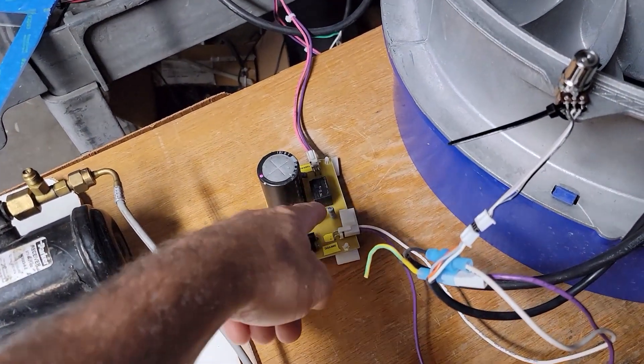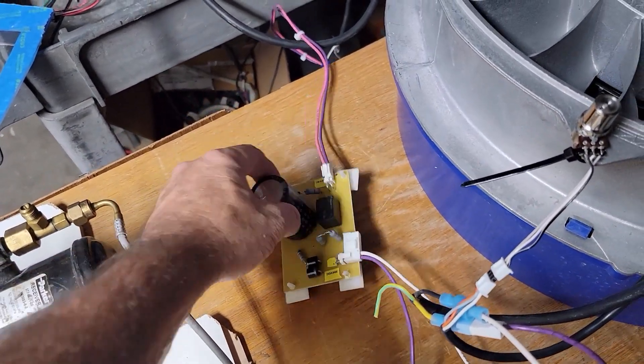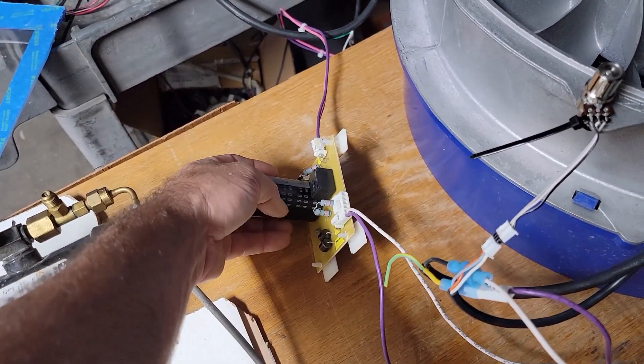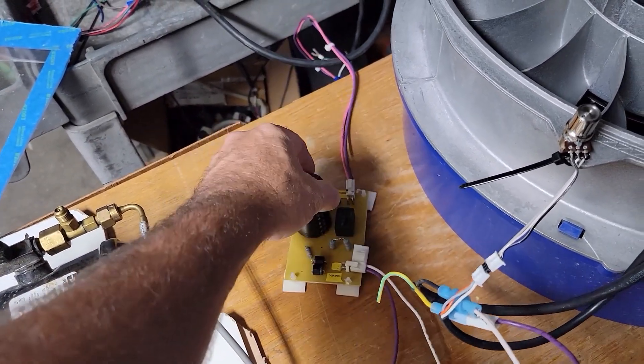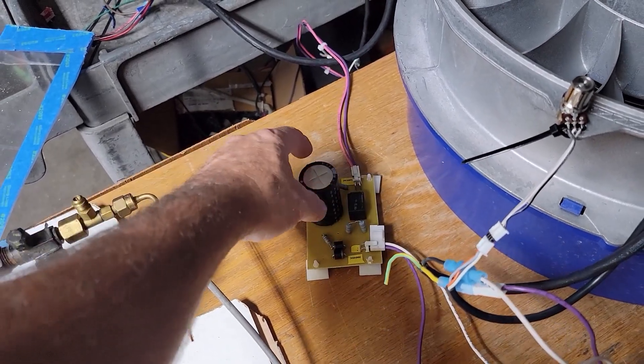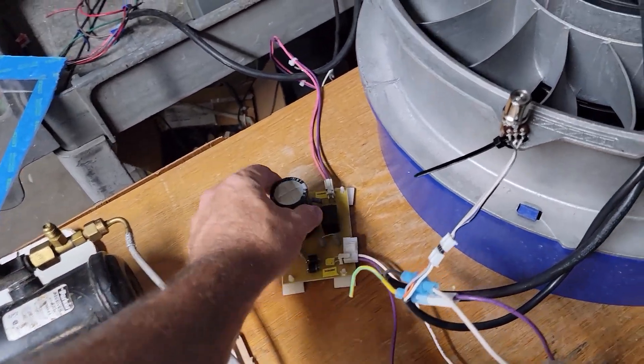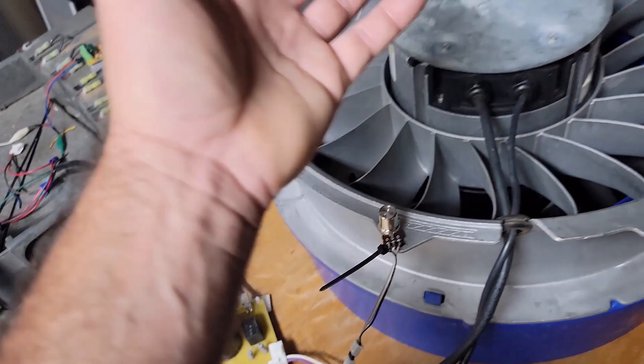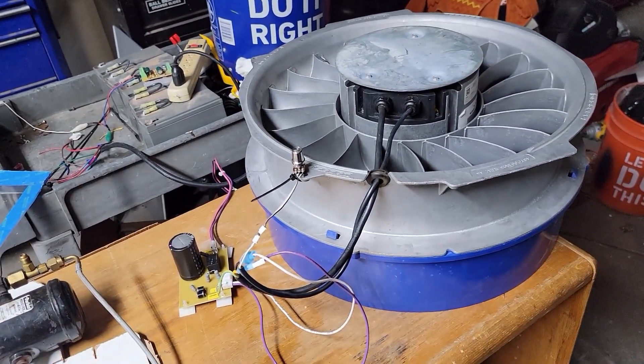I might have just removed that relay and a couple extra resistors and everything on there that was trying to delay the initial charge of the capacitor and just say screw it and just use it as I need to run motors like this without having to use a step up transformer or whatever.